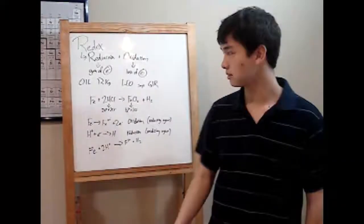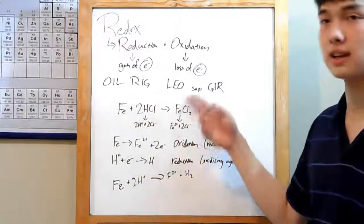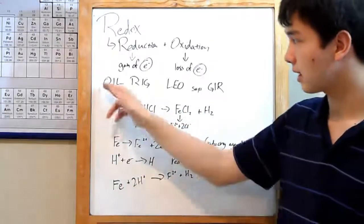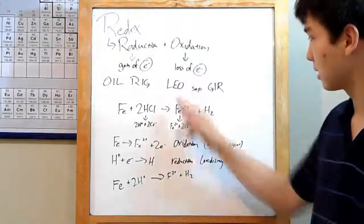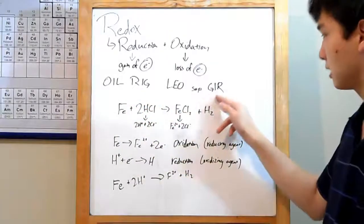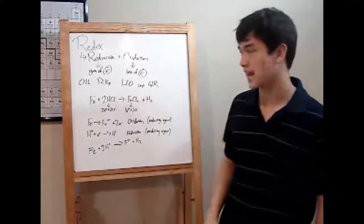There are two ways to remember this relationship: the mnemonic OIL RIG, or the mnemonic LEO says GRR. In OIL RIG, oxidation is loss, reduction is gain. LEO says GRR: loss equals oxidation, gain is reduction.